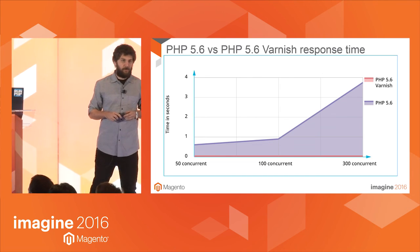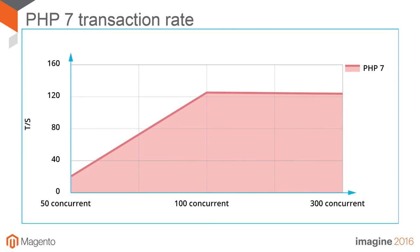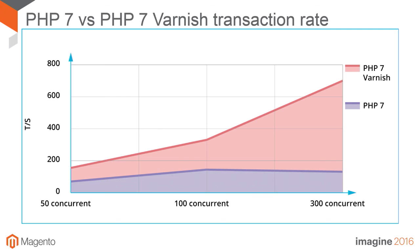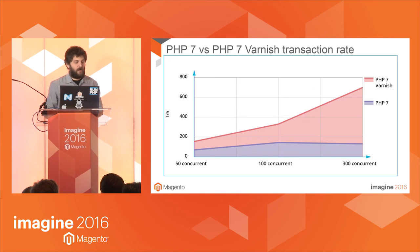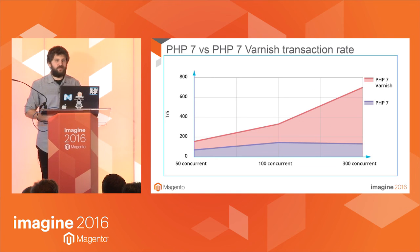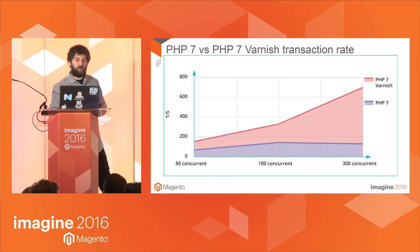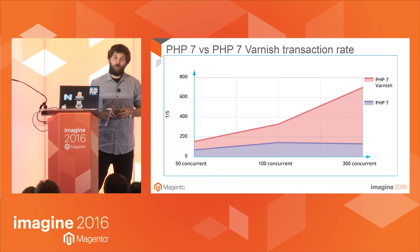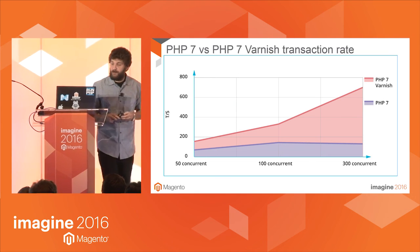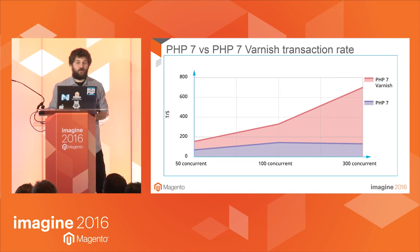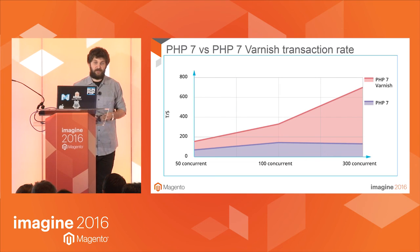Now I'll move to PHP 7. This is the transaction rate, and this is how it compares with PHP 7 with Varnish. With 300 concurrent users, the transaction rate was almost five times higher with Varnish. With 100 concurrent users, the transaction rate was almost two times higher with Varnish.